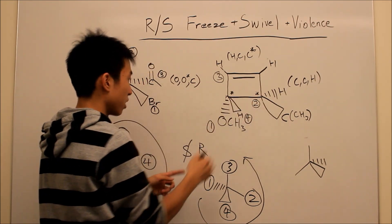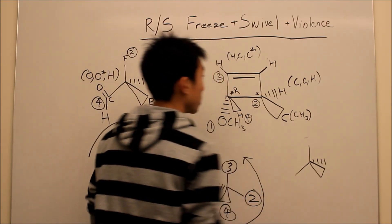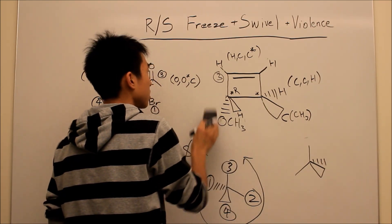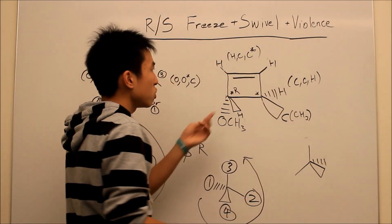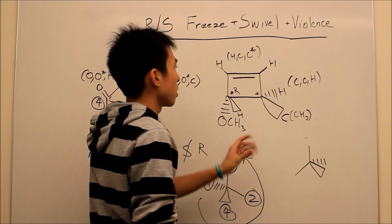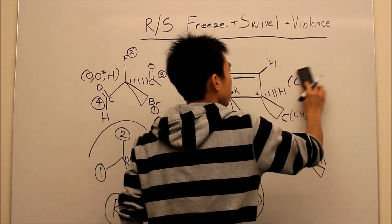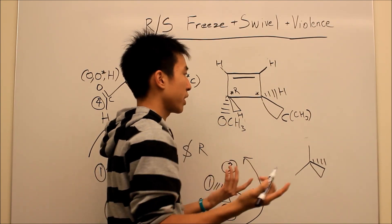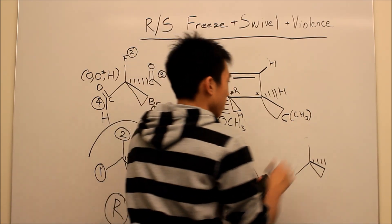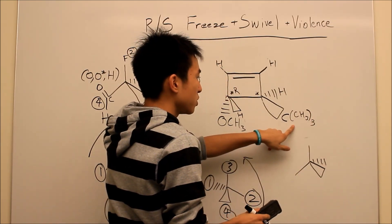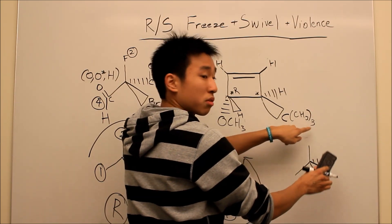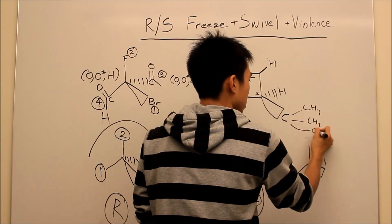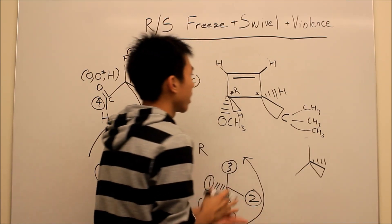So let's do this chirocenter here. I'm going to write it as R. When you do the next chirocenter, you want to erase everything you did before so you don't get confused. On the test, if you're using pen, maybe try doing this on the side so you don't have to cross it out afterwards — it'll get messy. This chirocenter: before we rank, if you see a tert-butyl group on the test, you want to draw it out so you can see it better. So I'm just going to draw it as CH3, CH3, and CH3.